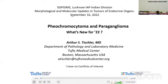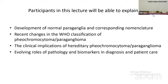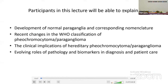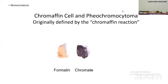This presentation is a brief update on what we know about pheochromocytoma and paraganglioma in 2022. At the end of the lecture, the participants will be able to explain the development of normal paraganglia and corresponding nomenclature, recent changes in the WHO classification of pheochromocytoma paraganglioma, the clinical implications of hereditary pheochromocytoma paraganglioma, and the evolving roles of pathology and biomarkers in diagnosis and patient care.